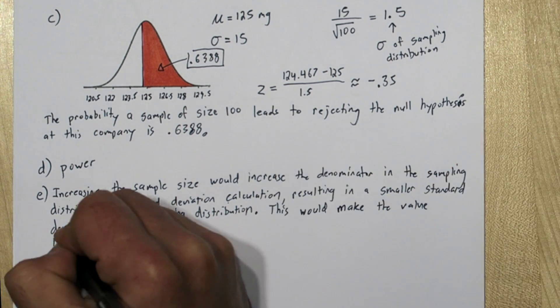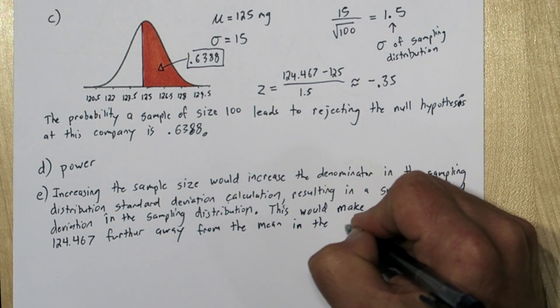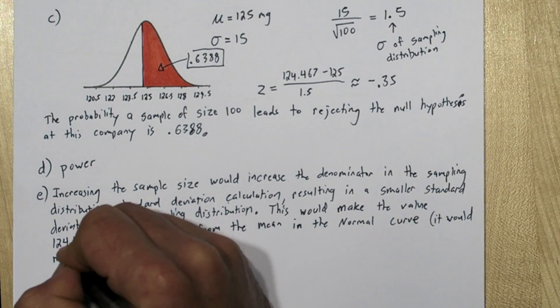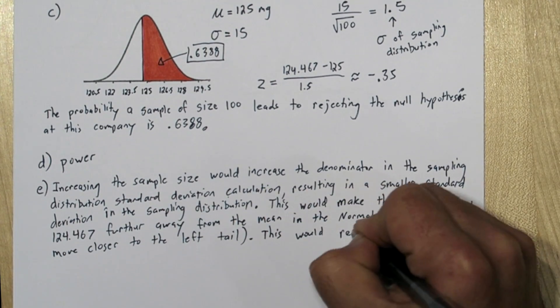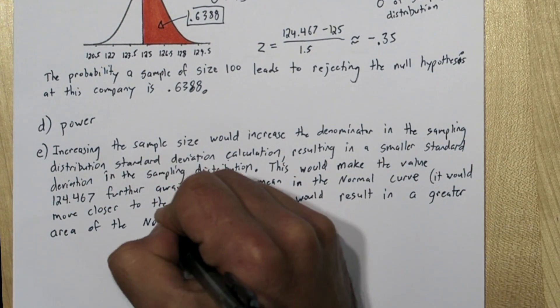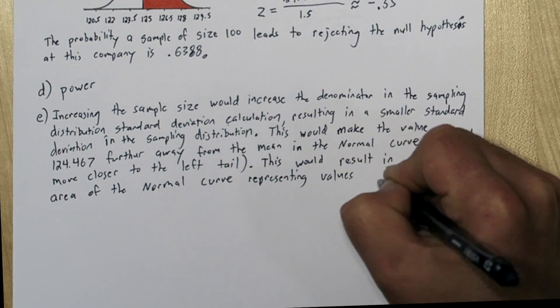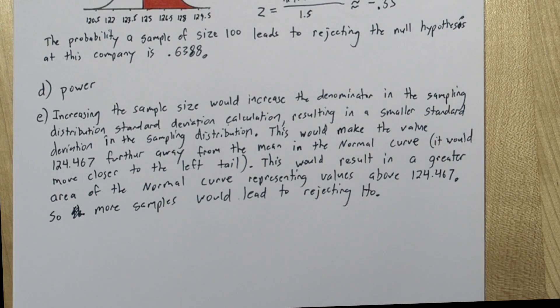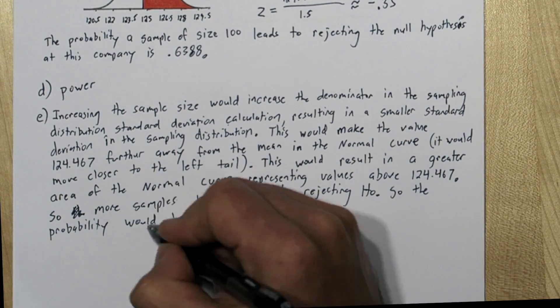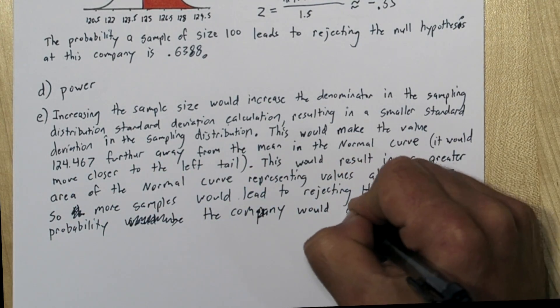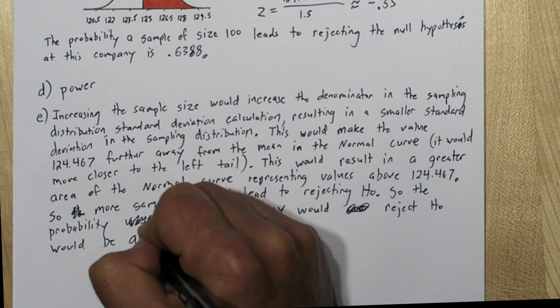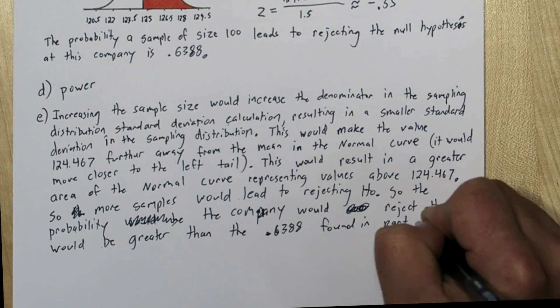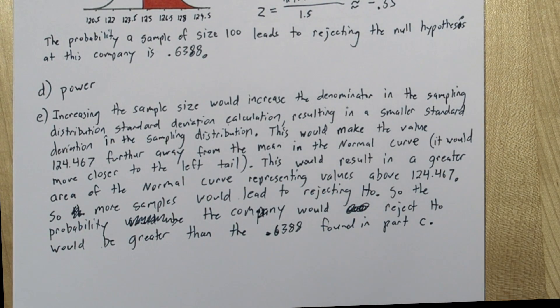This would make the value 124.467 further away from the mean in the normal curve. It would move closer to the left tail. This would result in a greater area of the normal curve representing values above 124.467. That means more x bars, more sample means would lead to rejecting the null hypothesis. So the probability the company would reject the null would be greater than the 0.6388 we found in part C.